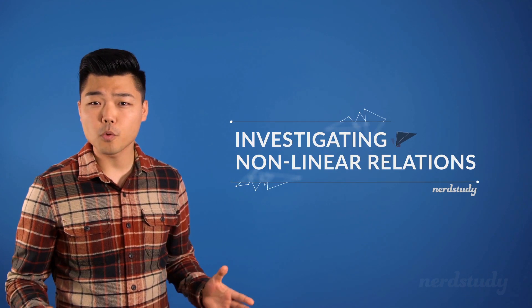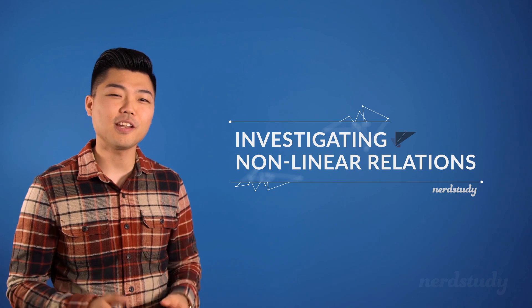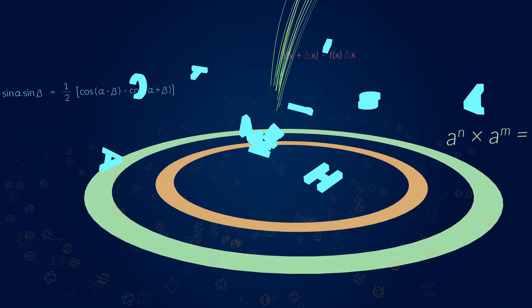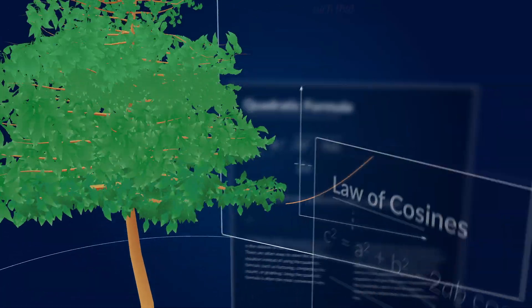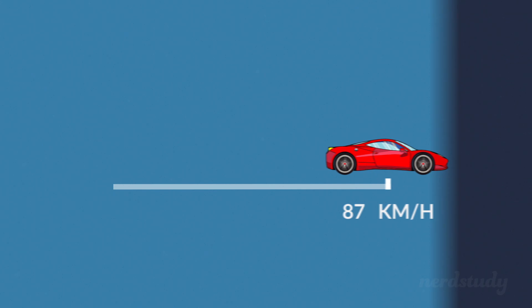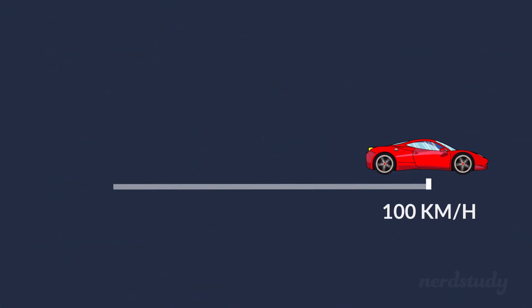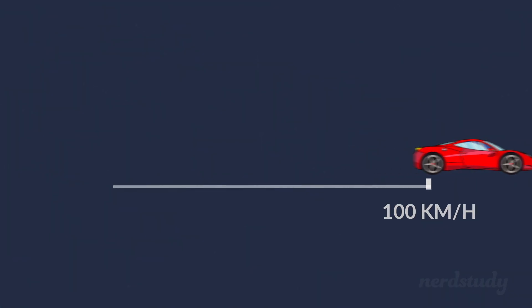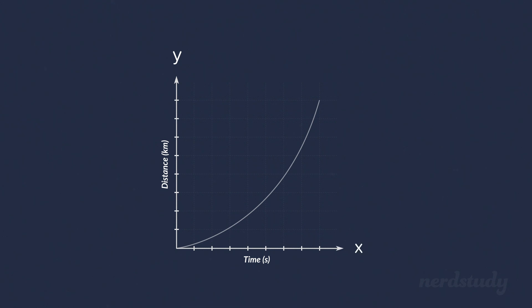So in this video we will be investigating nonlinear relations. If you look at a car going from zero kilometers per hour to 100 kilometers per hour, you might see a graph that looks more like this as opposed to this.